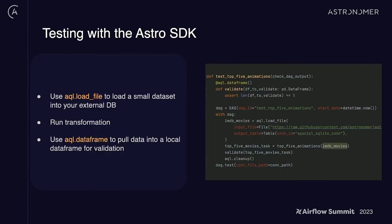When it comes to testing using the Astro SDK, let's say you have some Snowflake function you want to test. You can use aql.loadfile to load a small test dataset into that Snowflake instance, run that task, and then use aql.dataframe to run a validate function. In this case, we want to get the top five animations and validate that the length of the data frame produced is five. We make the data frame, create the dependencies, and run DAG.test with the connection path that has the Snowflake connection. That's all you need to locally test what would otherwise be a very hard to test external system.